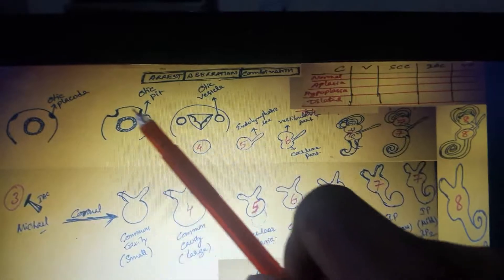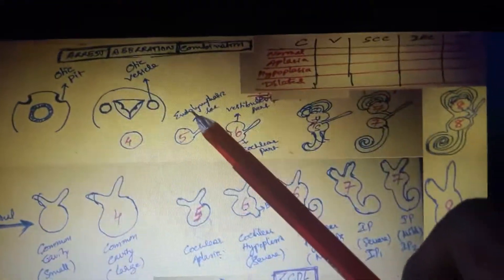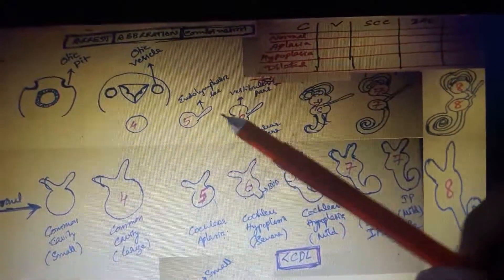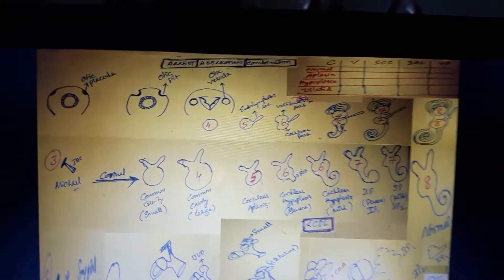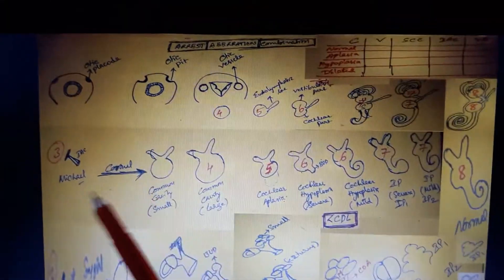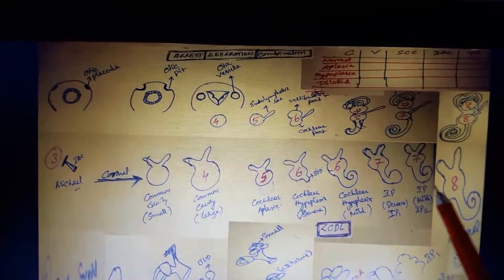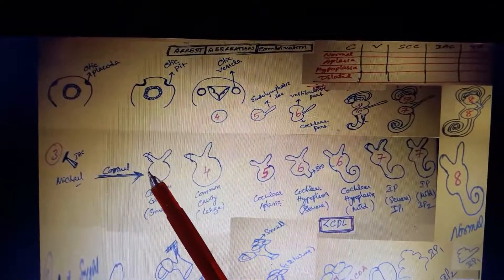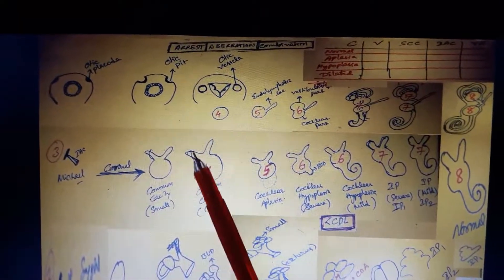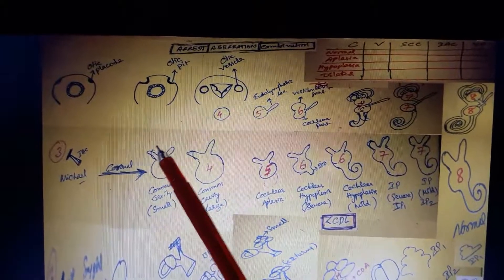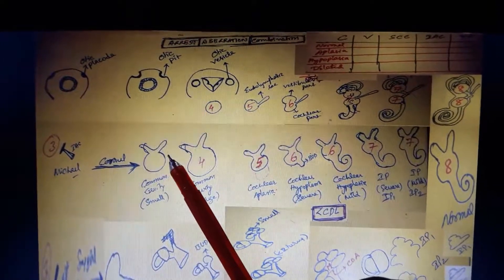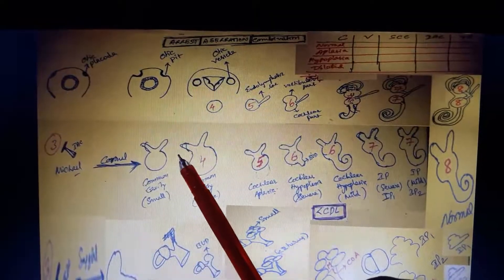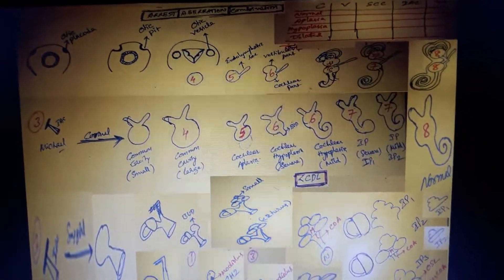The coronal HRCT sections have been given great importance in the Jackler paper, which is the original paper on abnormal cochleas. This whole topic is based on the Jackler paper and the Sennaroglu 2002 paper.